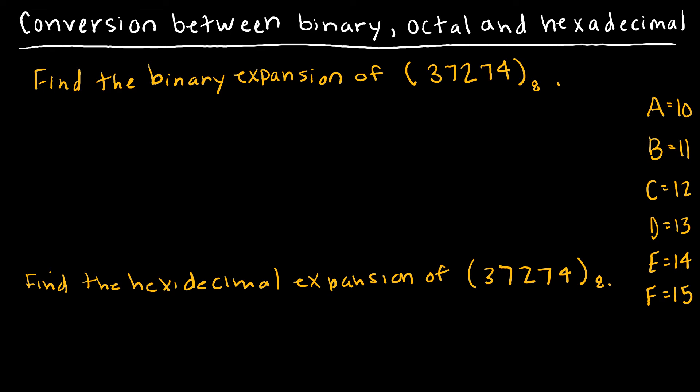Now let's take a look at going from an octal expansion to both binary and hexadecimal. In the previous example we were going from base 2 to larger bases — 2 to the 3rd and 2 to the 4th — which made it super easy. Now we're going in reverse. Octal is 2 to the 3rd, binary is 2 to the 1st, so we're going from a larger base to a smaller one. Each octal value is going to represent 3 binary values, because 2 to the 3rd gives 3 binary digits.